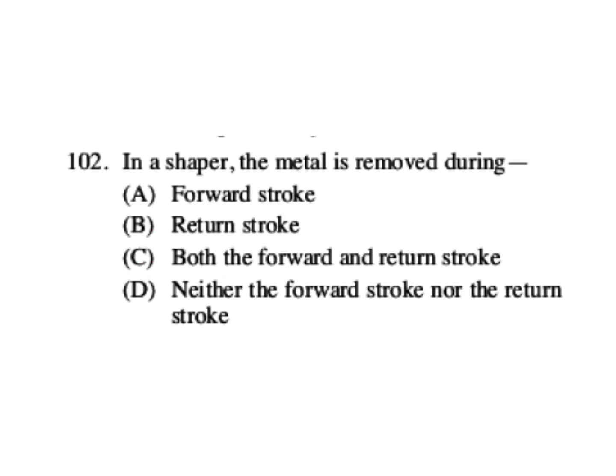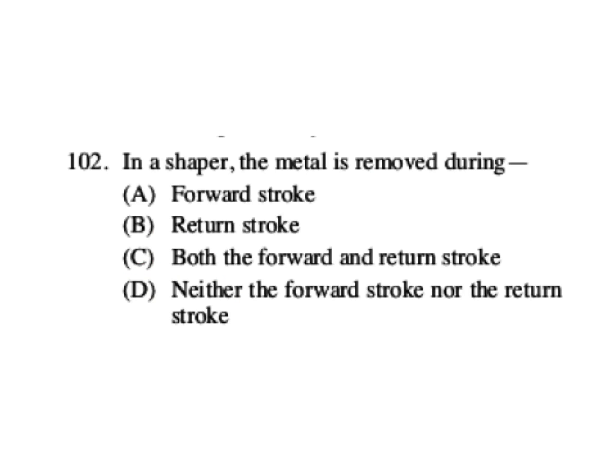The metal is removed during forward stroke. One more thing is important here: the time of forward stroke is greater than the time of return stroke, because return stroke has no use. That's why very quickly it's coming back. Forward stroke only we are doing the metal removal operation.